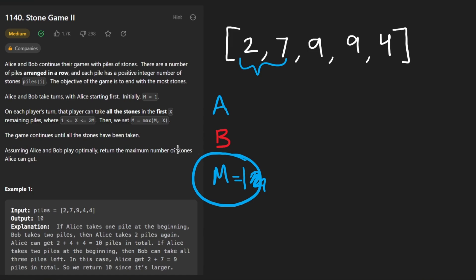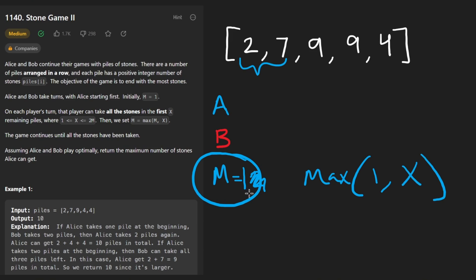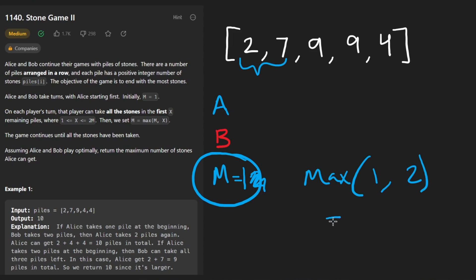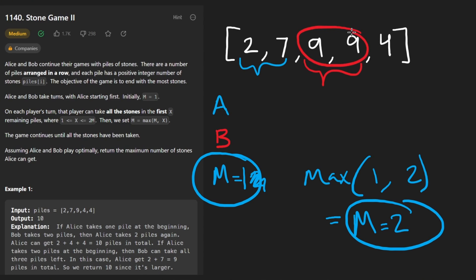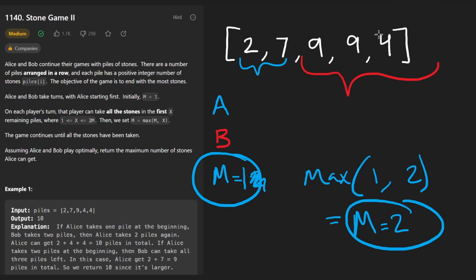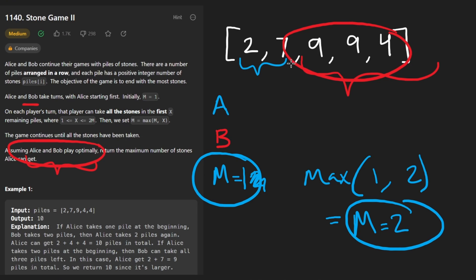Suppose Alice does take both stones. We update our m value - it was originally 1. We update m by always setting it to the max of either itself (which is 1) or the x value, where x is the number of stones chosen in the previous turn. Alice chose 2 stones, so the max is 2, and m is now 2. Now when player B goes, that doesn't mean they can choose from the first two - it means they can choose from two times m, so Bob can actually choose 4 piles. But we only have three left, so be careful not to go out of bounds.